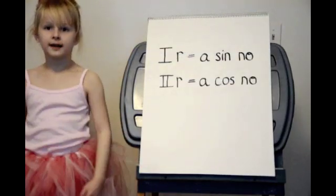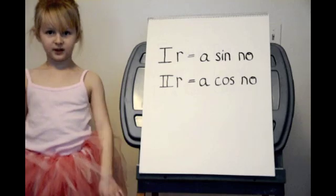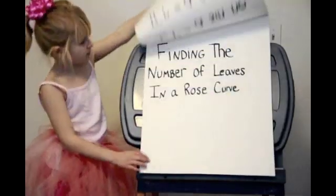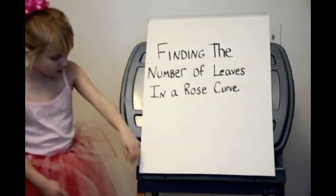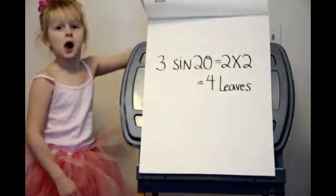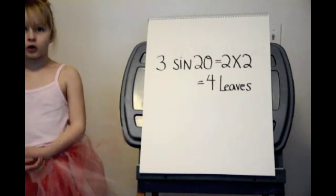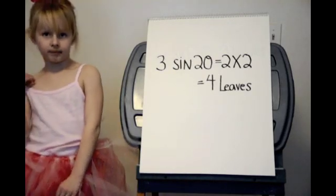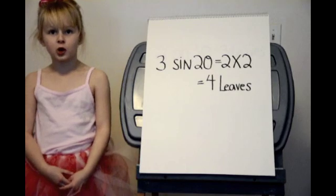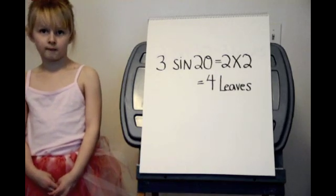Rose curves are identified by recognizing one of these two forms. If n is even, there are twice that number of leaves. For example, if n equals 2, the number of leaves would equal 4.